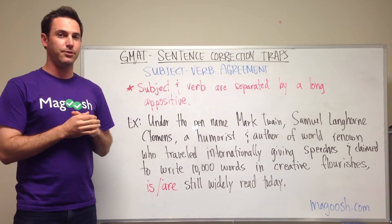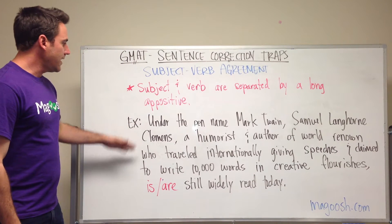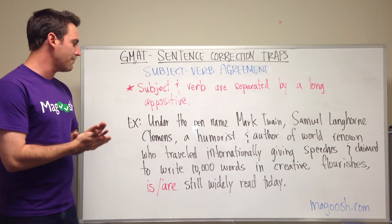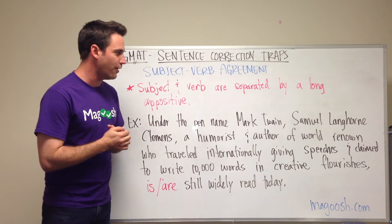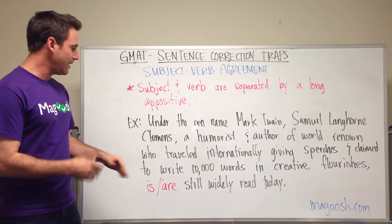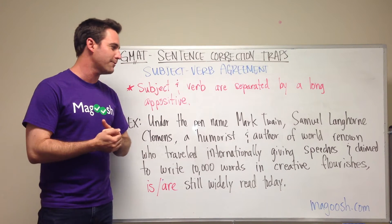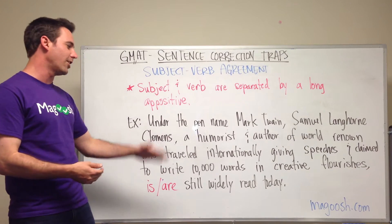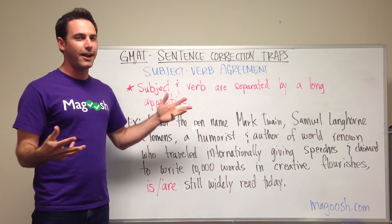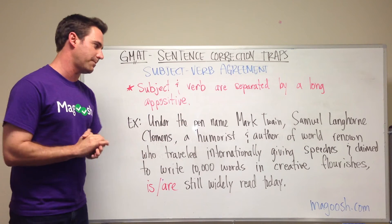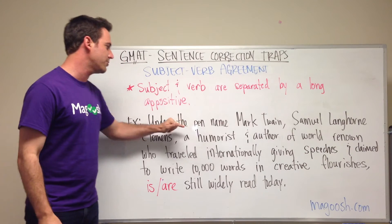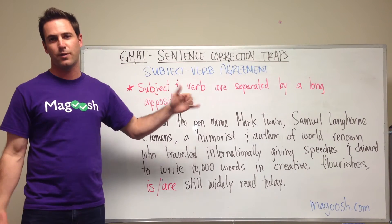So we have an example sentence here. It says: under the pen name Mark Twain, Samuel Langhorne Clemens, a humorist and author of world-renowned, who traveled internationally giving speeches and claimed to write 10,000 words in creative flourishes, is — or are — still widely read today. There's a whole lot in this sentence we don't have to pay attention to. We have this introductory phrase, 'under the pen name Mark Twain,' which we can ignore.